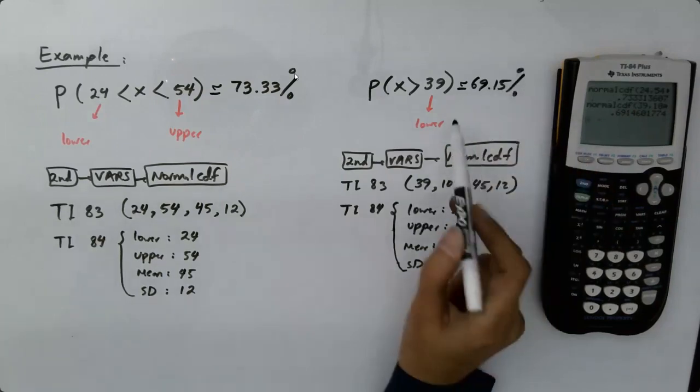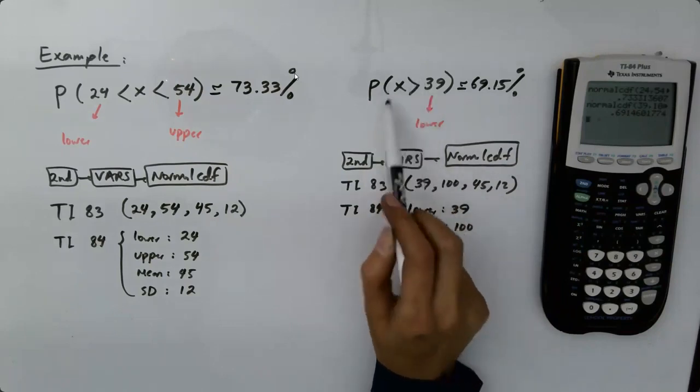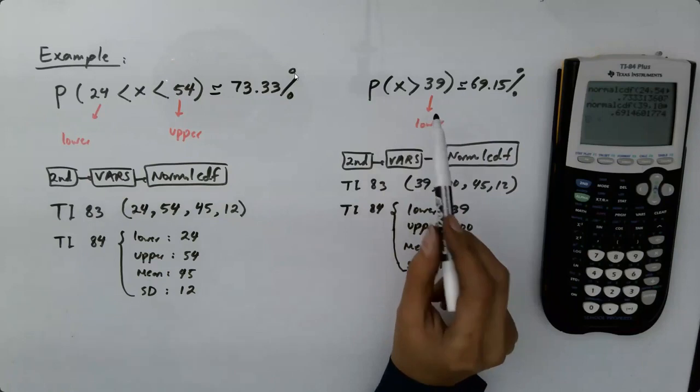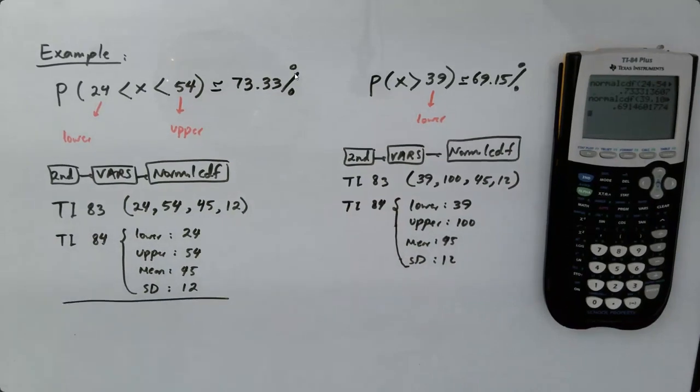That's the probability that you randomly select a person and that person spends more than 39 minutes in the store. So the second part of the question says, well, how many shoppers would you expect to be in the store? I have the probability, now I want to know how many shoppers.